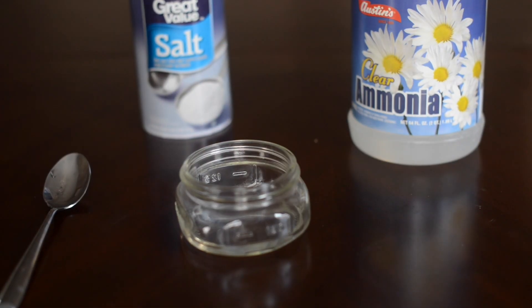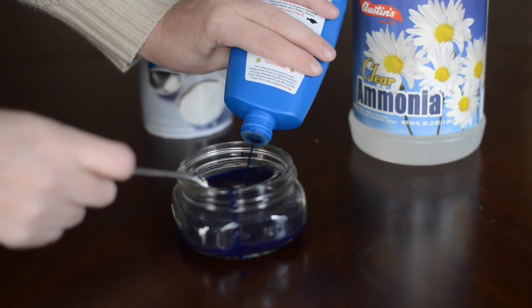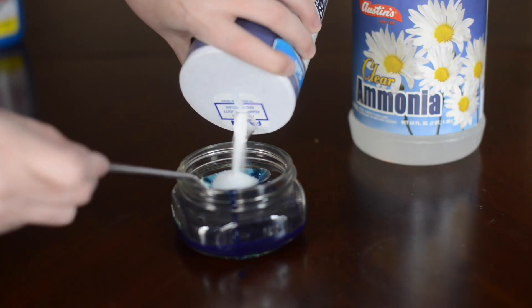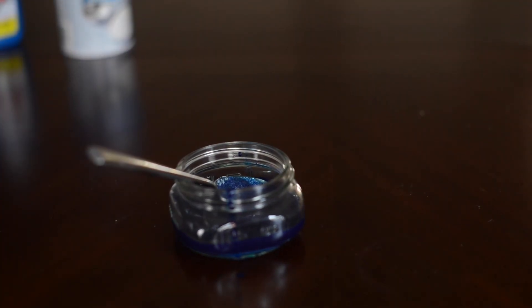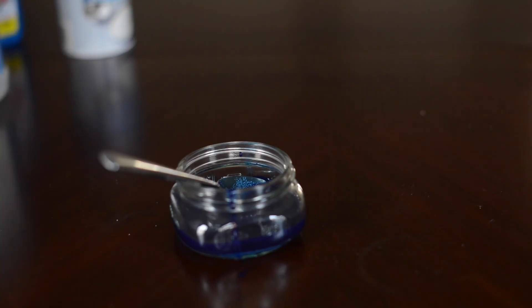So I already have three tablespoons of water in there. And then I added three tablespoons of bluing, three tablespoons of salt, and one and a half tablespoons of ammonia. And then I mix it up.